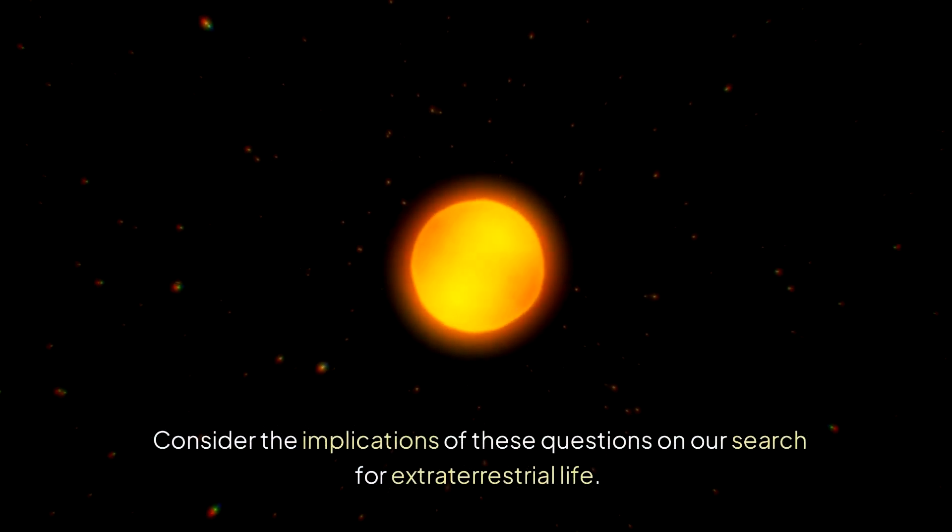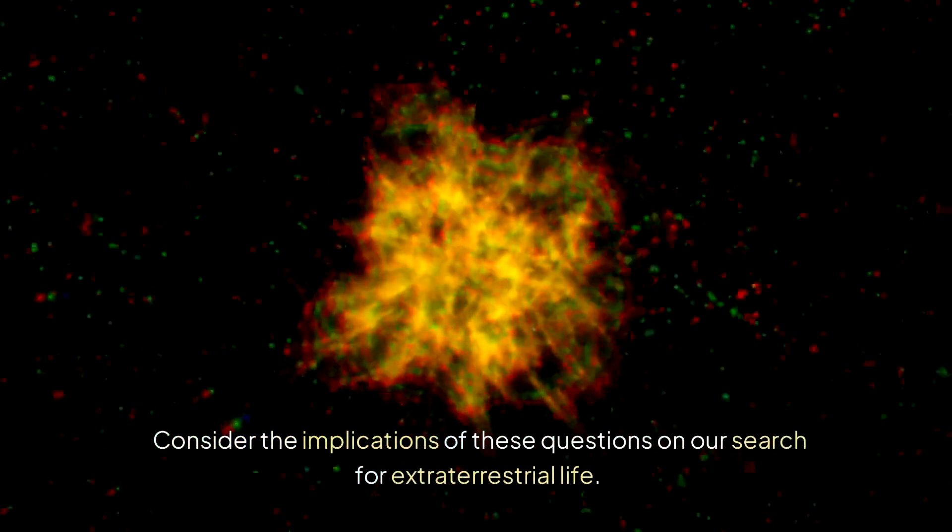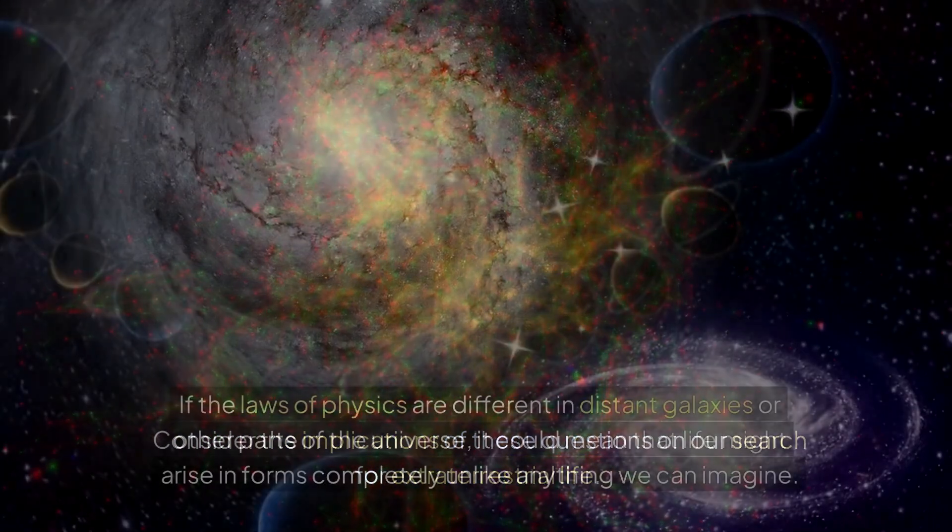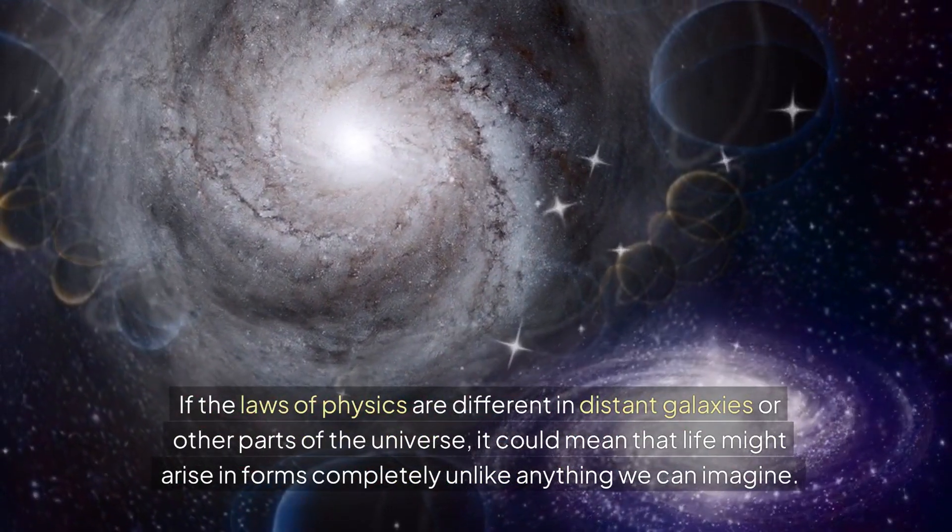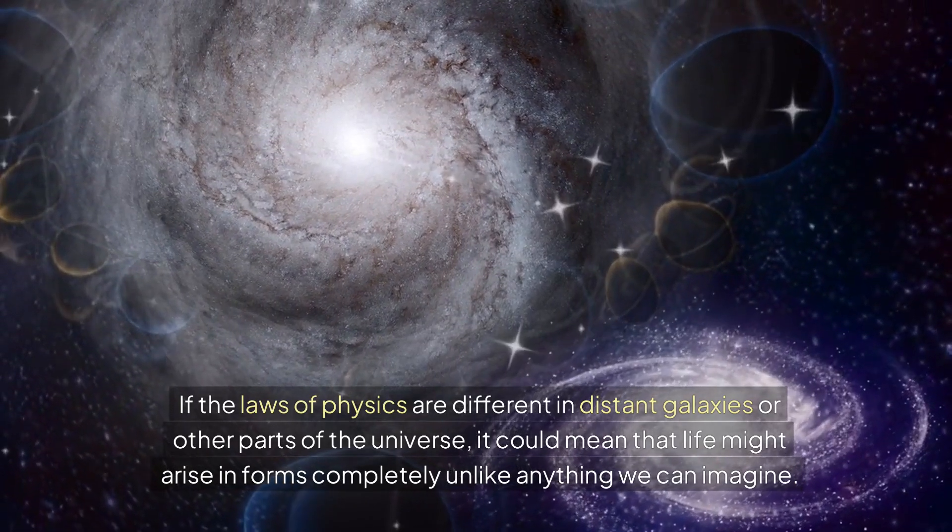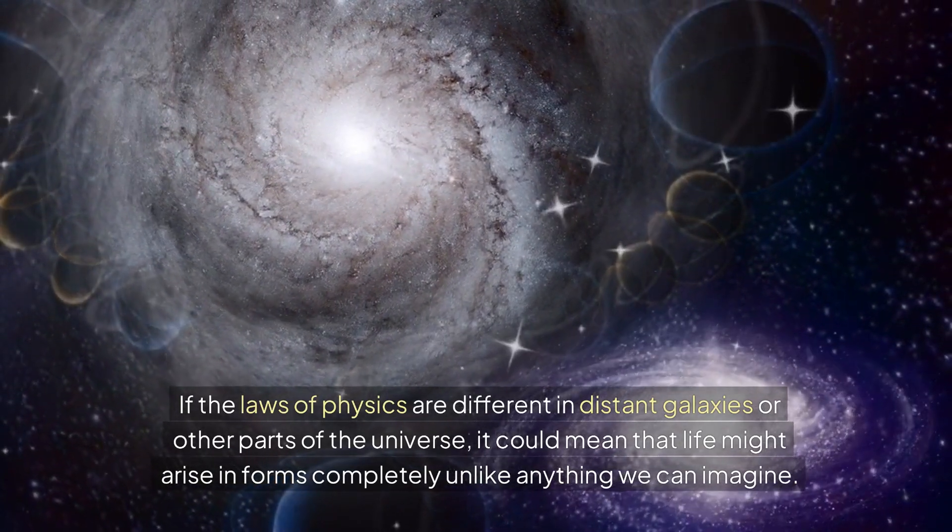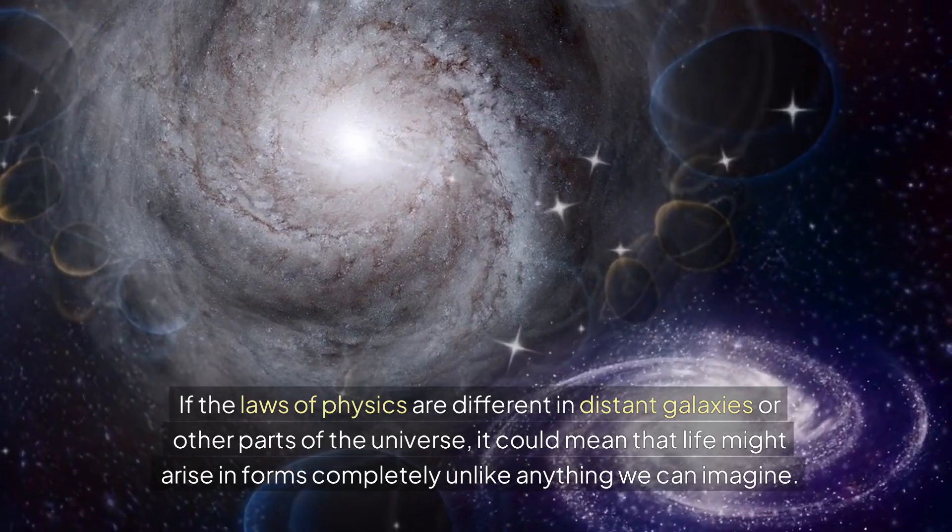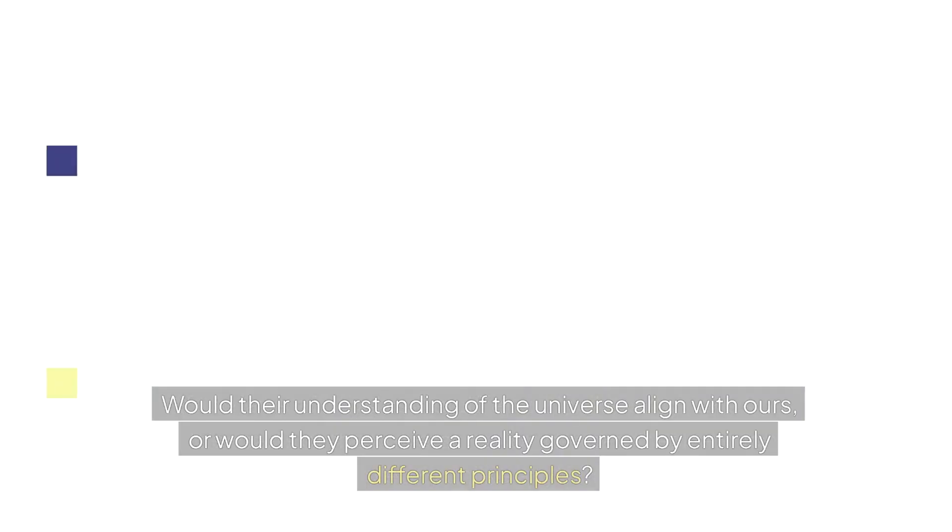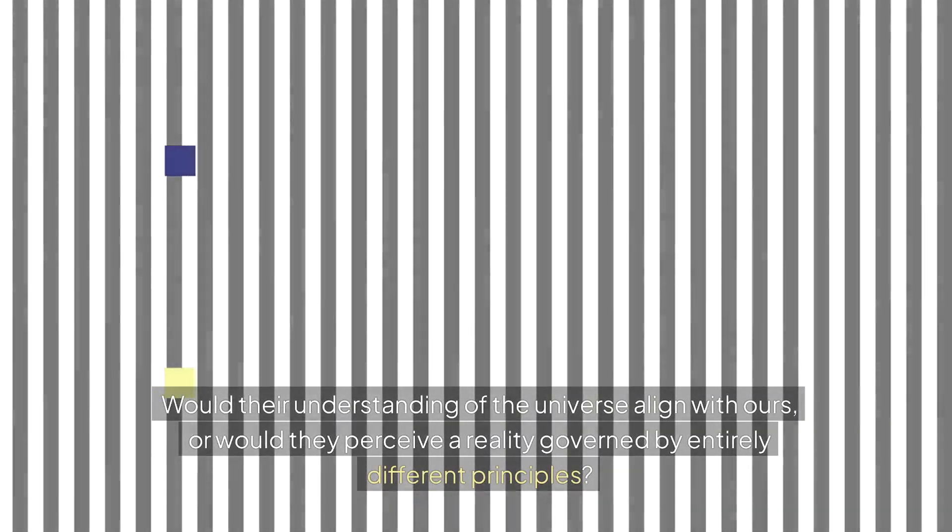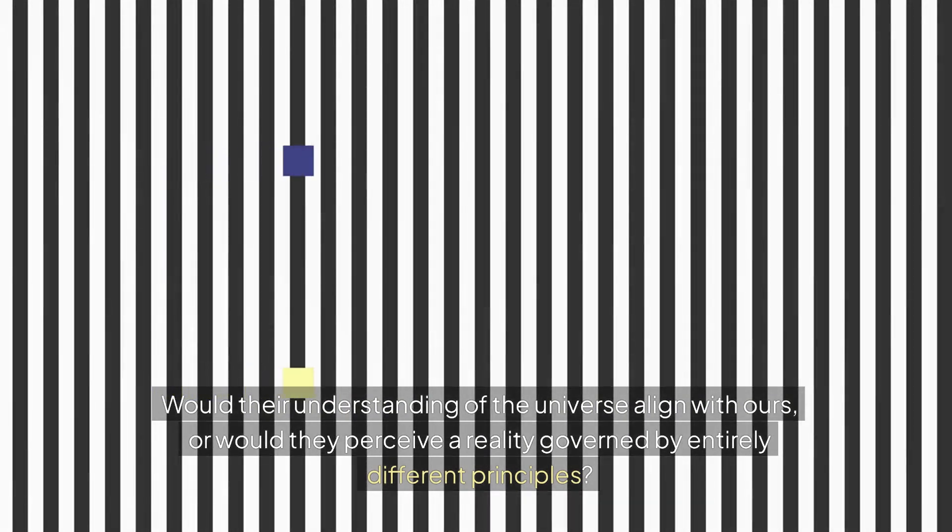Consider the implications of these questions on our search for extraterrestrial life. If the laws of physics are different in distant galaxies or other parts of the universe, it could mean that life might arise in forms completely unlike anything we can imagine. Would their understanding of the universe align with ours? Or would they perceive a reality governed by entirely different principles?